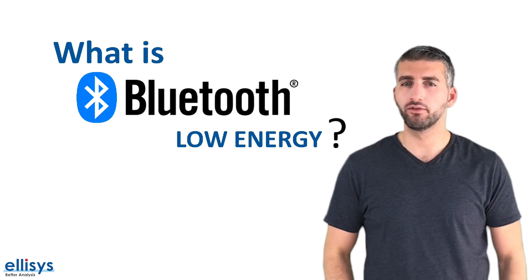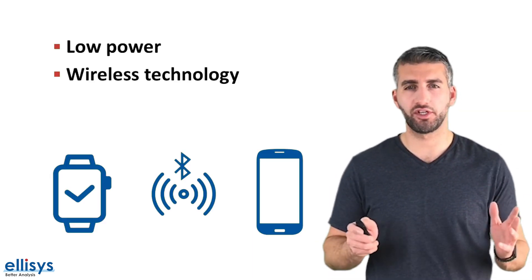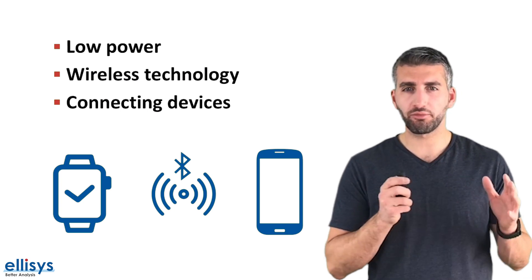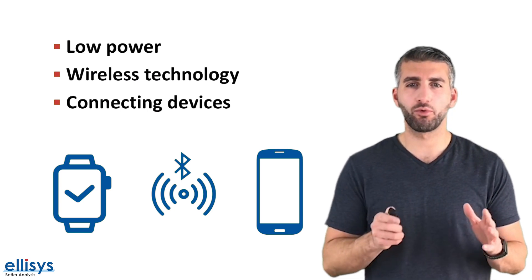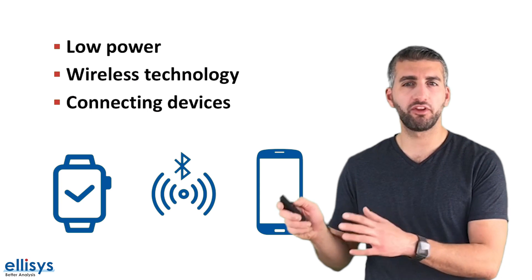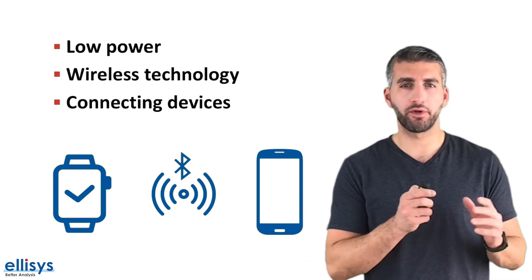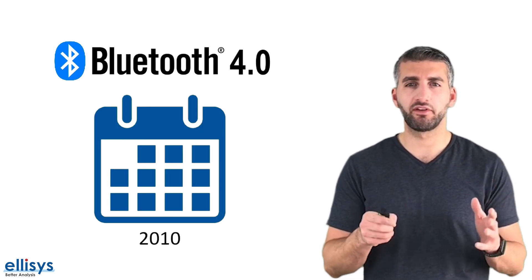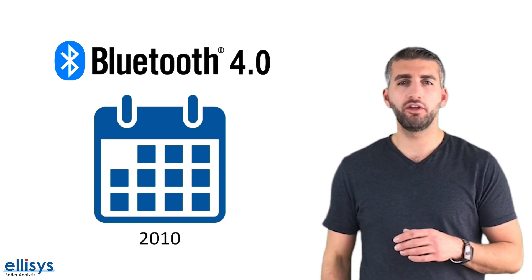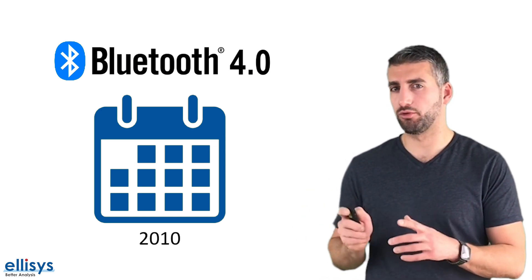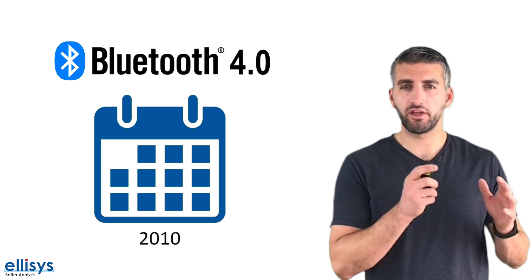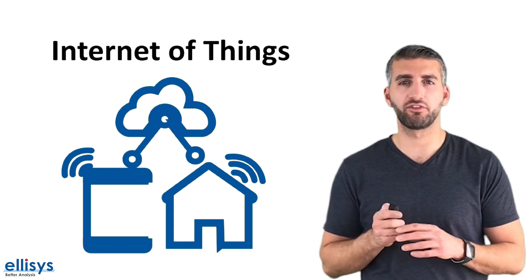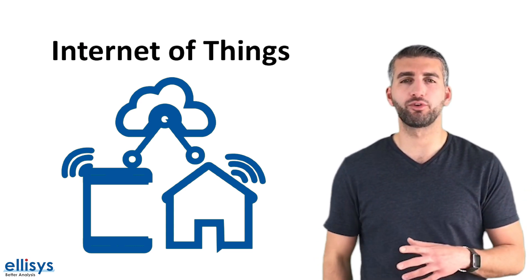So what is BLE? BLE is a low-power wireless technology used for connecting devices with each other, and the key term here is low power. BLE is targeted towards applications that need to consume less power and may need to run on batteries for longer periods of time — months or even years. BLE was introduced back in 2010 as part of the Bluetooth 4.0 spec. It is not an upgrade to the original Bluetooth, but rather a new technology that focuses on IoT applications where small amounts of data are transferred at lower speeds.